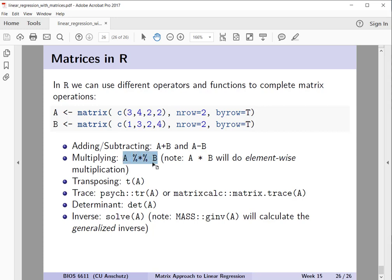We also noted in the past lecture that there were some special considerations, for example, with multiplication of matrices, where we have to use this percent sign, asterisk, percent sign, to actually do matrix multiplication, whereas if we just used A times B with this asterisk like we might for two scalar values, R will try to implement element-wise multiplication, and it won't actually do the matrix multiplication we're thinking it needs to do.